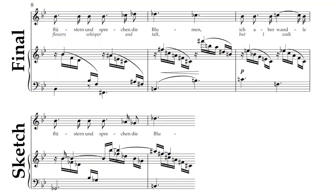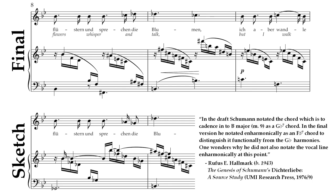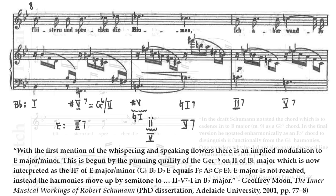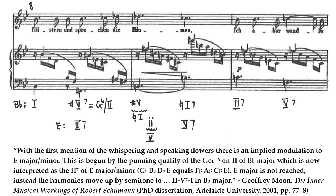Rufus Hallmark, another respected Schumann scholar, looked at Schumann's sketches and noted that he did just that in the sketches — Gb instead of F-sharp. So the alteration here was late in the composition process. He wondered why Schumann did not also notate the vocal line enharmonically at this point. Geoffrey Moon's analysis looks at this passage simultaneously in both Bb and E — a testament to the sheer harmonic weirdness that you can view it through two lenses a tritone apart and it makes sense in either one. None of these analyses satisfactorily explained Schumann's spelling choices.